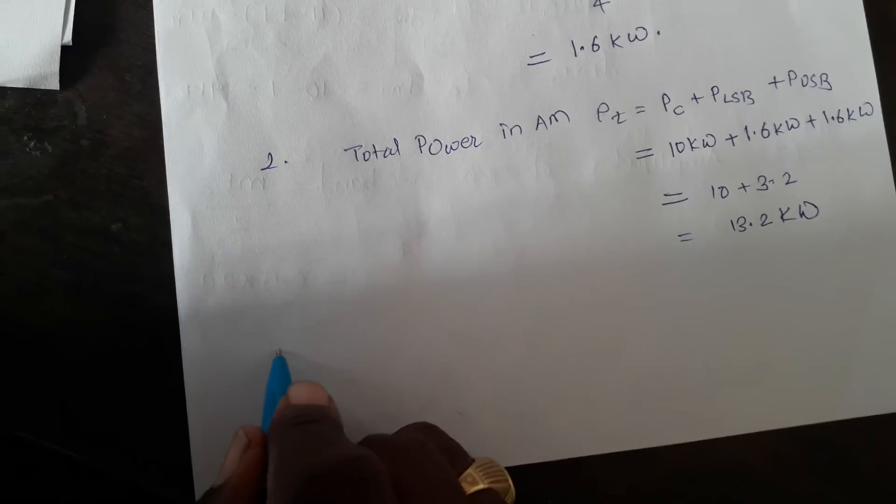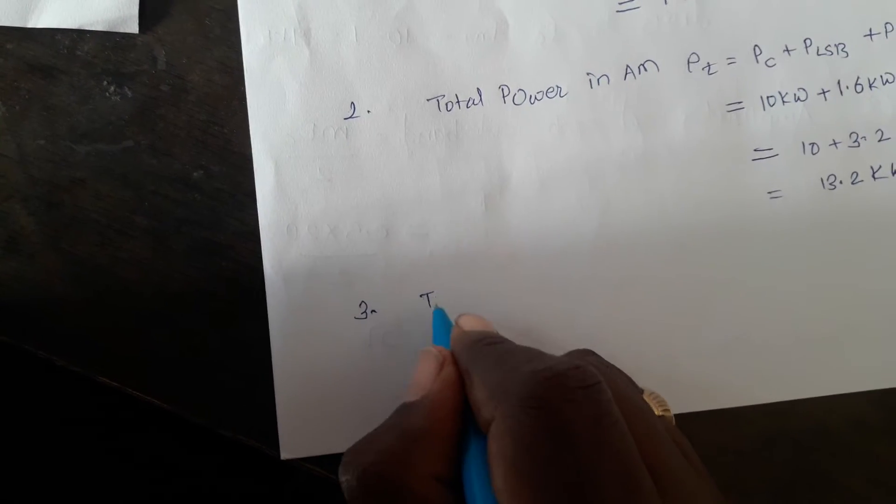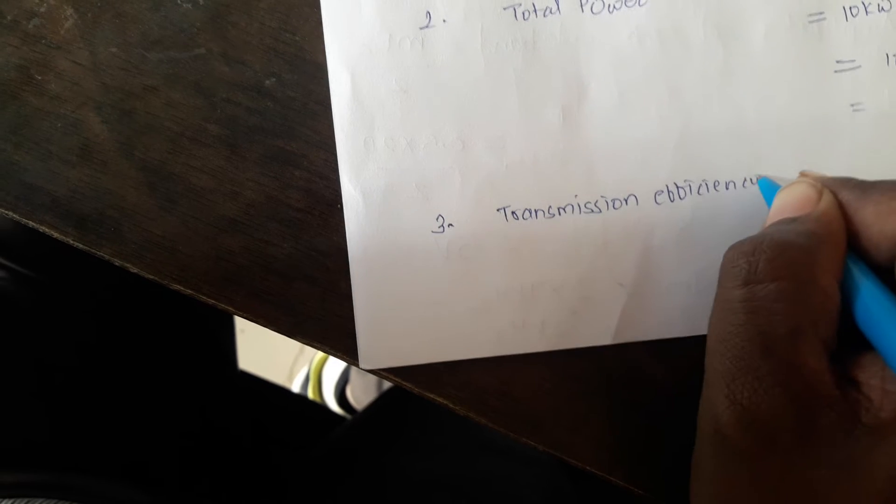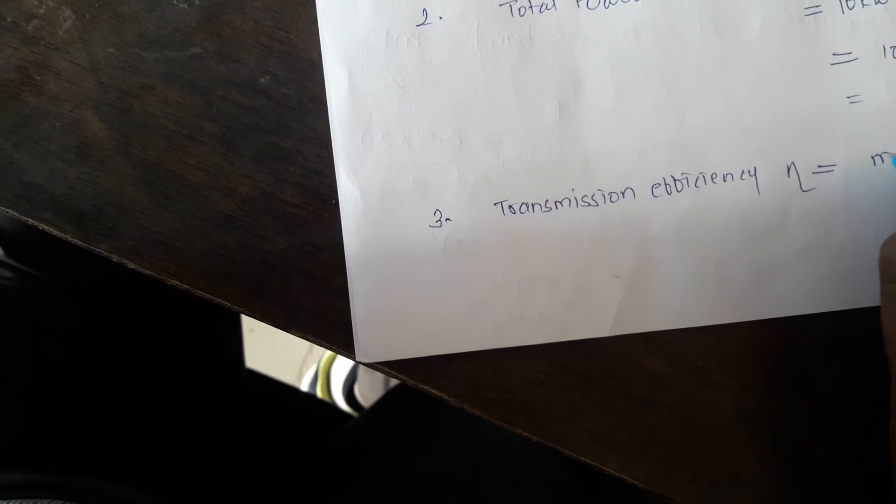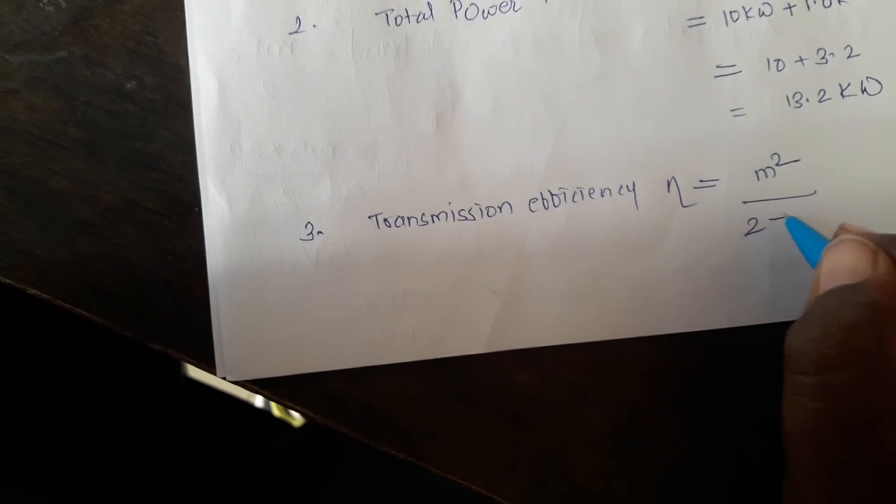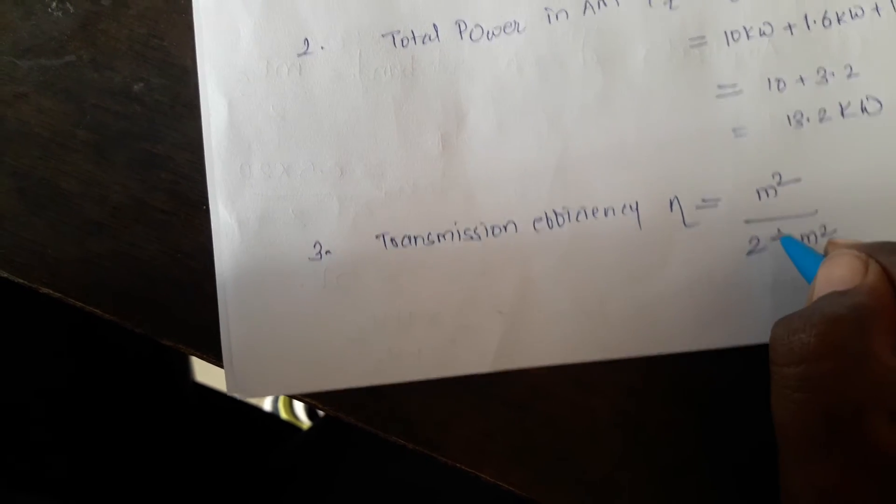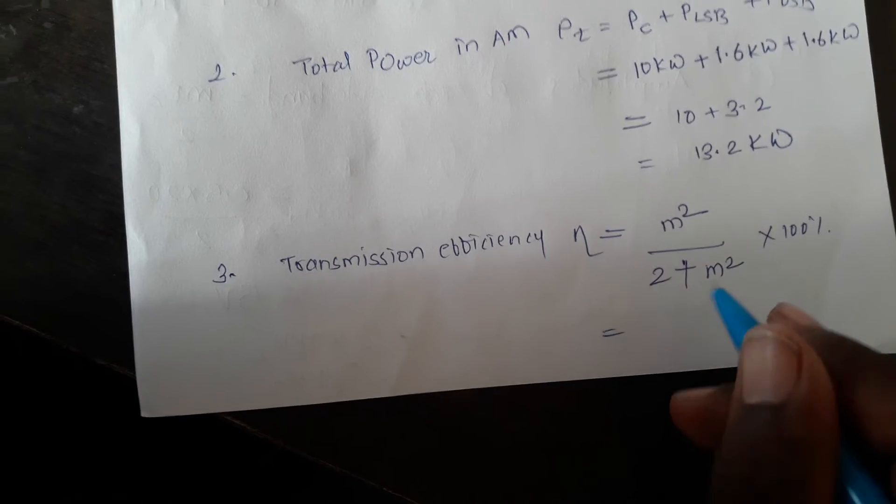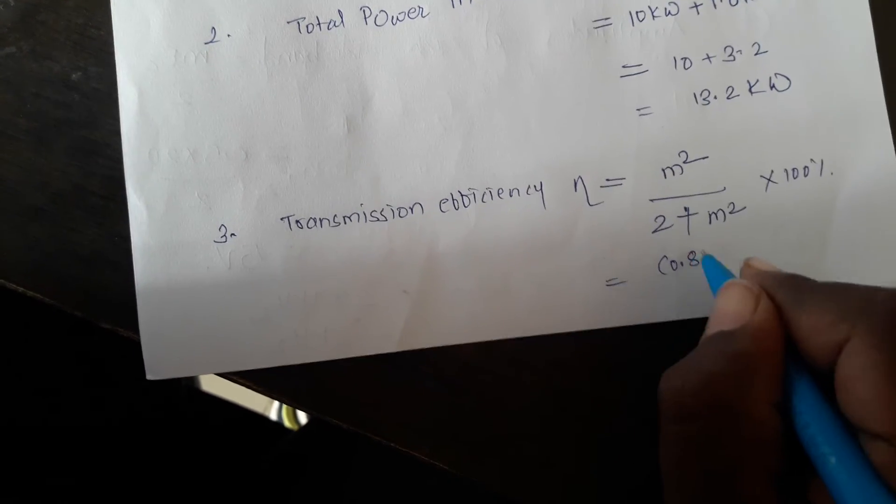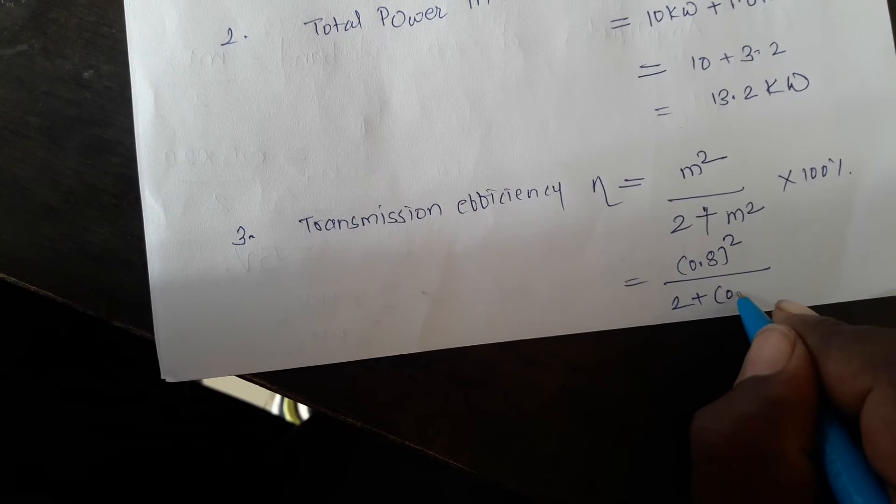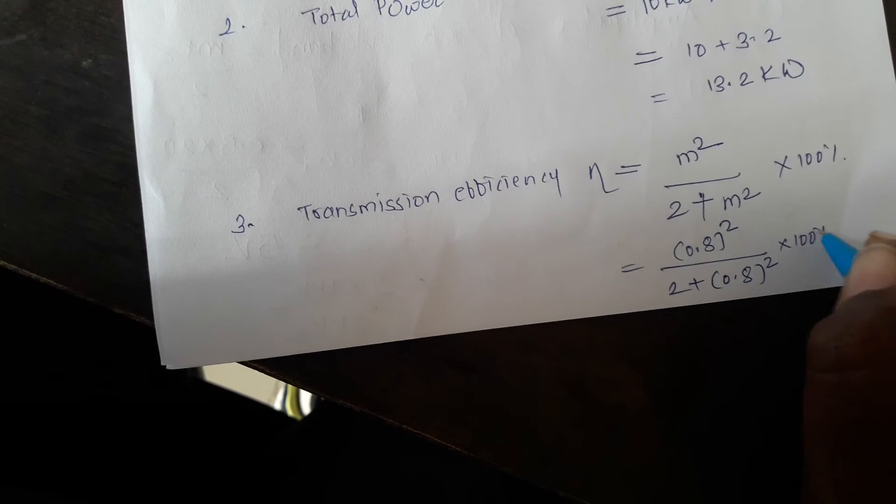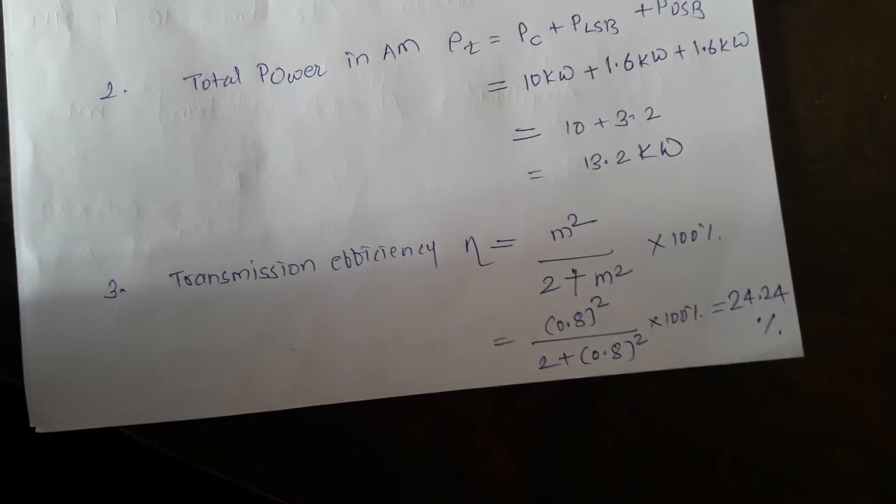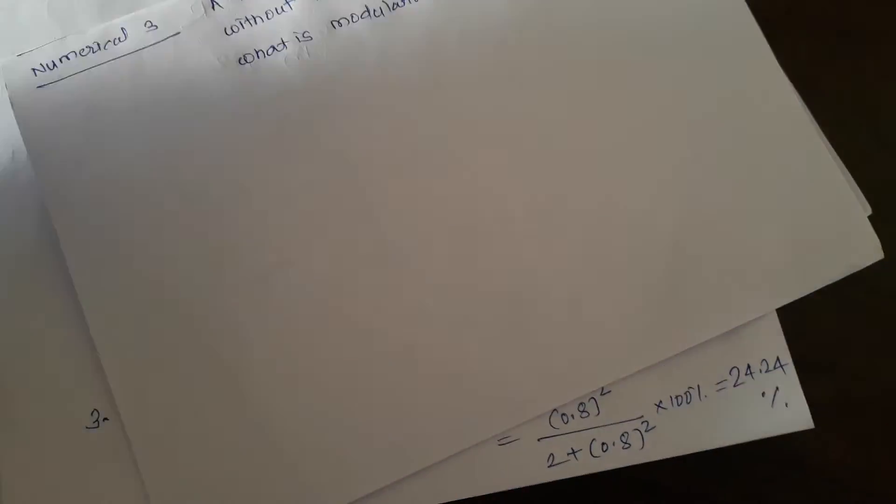Now our third point is transmission efficiency. The formula for transmission efficiency η equals m squared divided by 2 plus m squared, multiplied by 100 percent. Substituting m equals 0.8, we get 0.8 squared divided by 2 plus 0.8 squared times 100 percent, which equals 24.24 percent transmission efficiency. Now our next numerical is to calculate the modulation index.